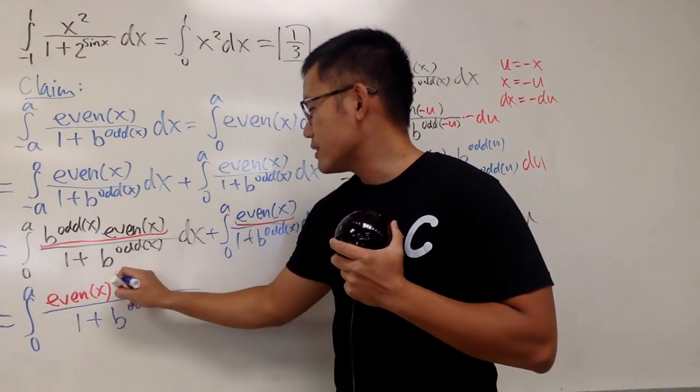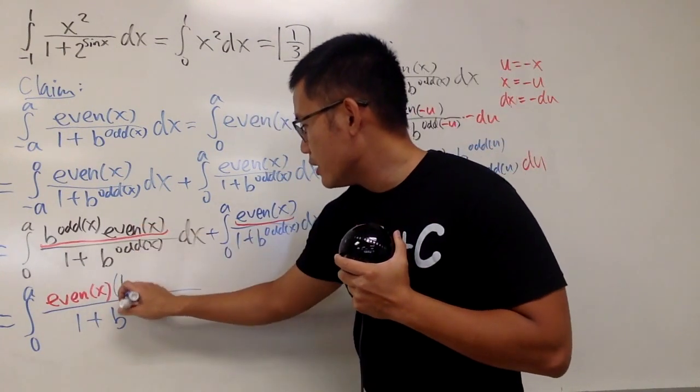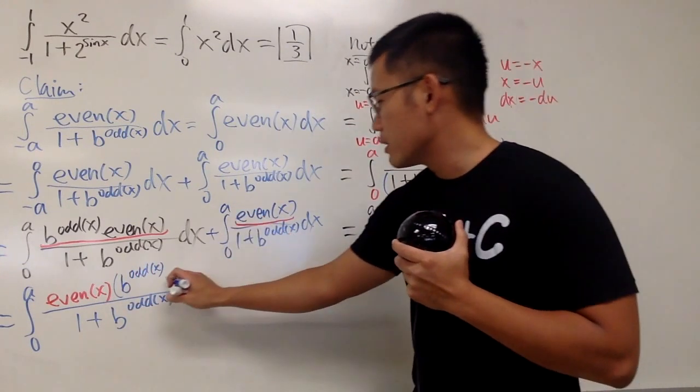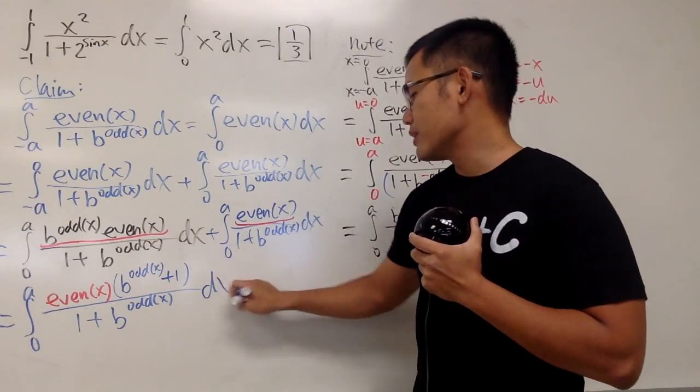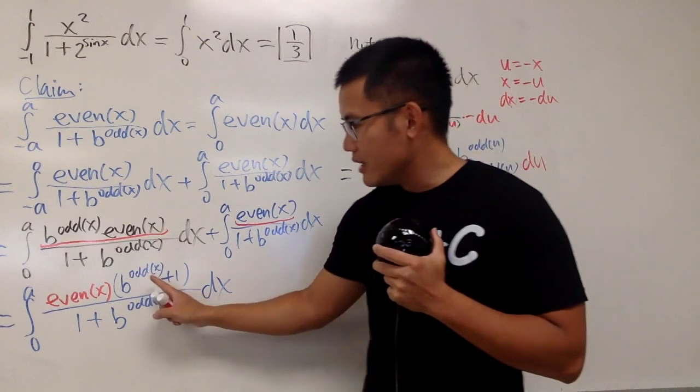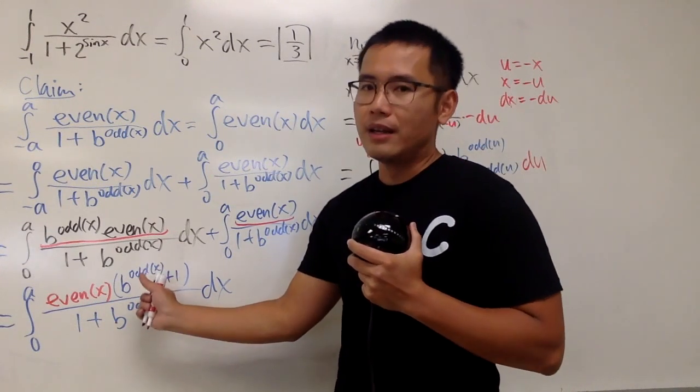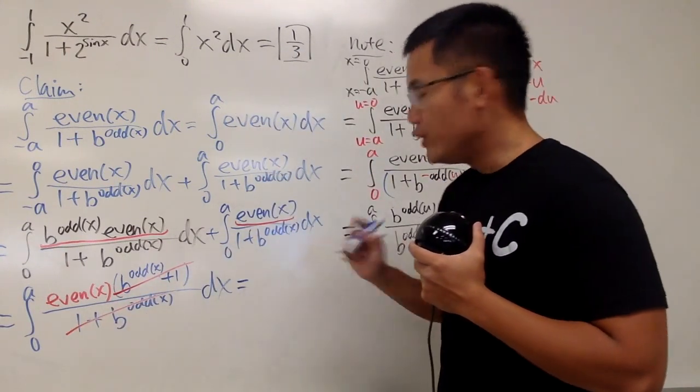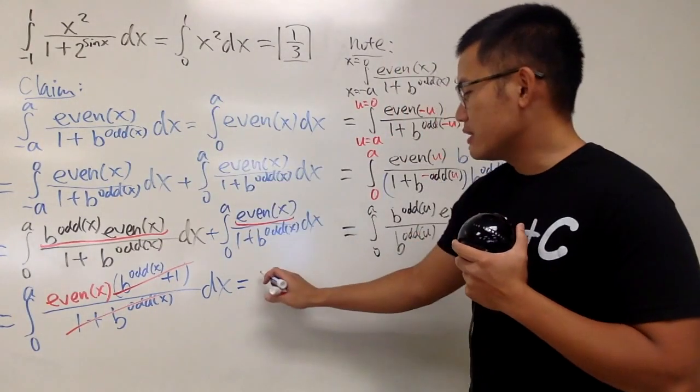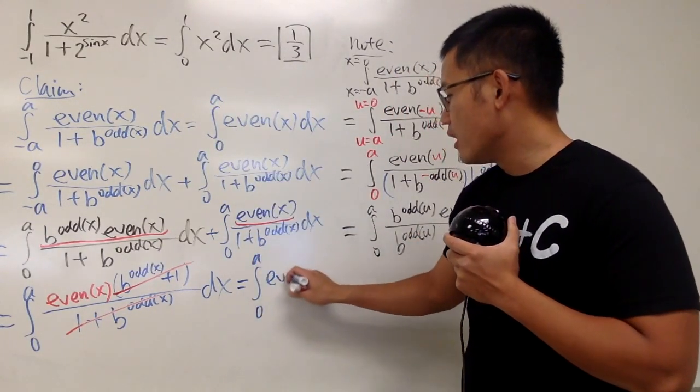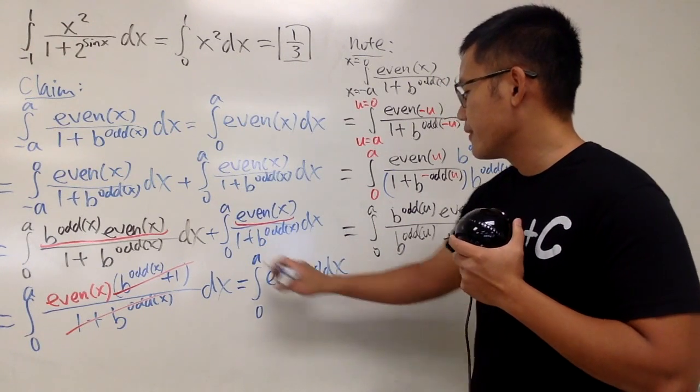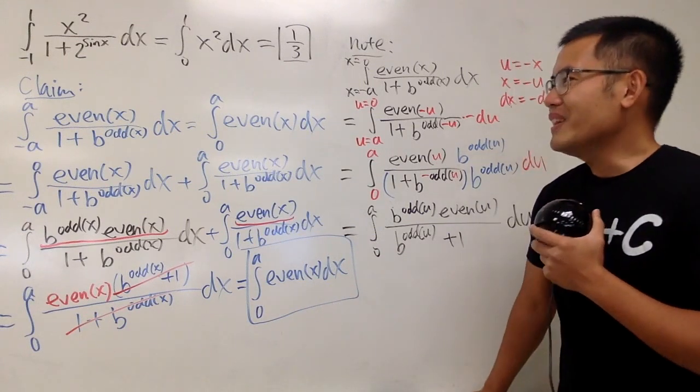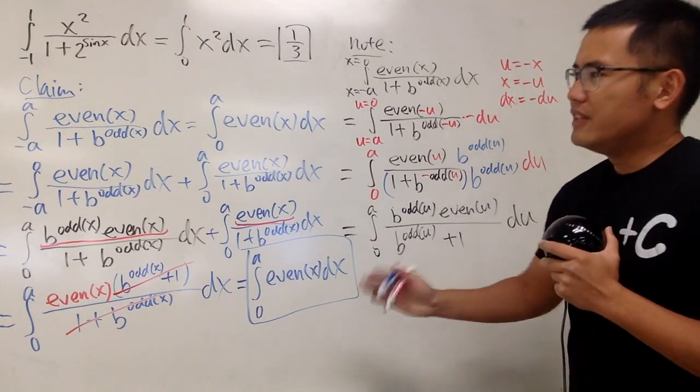And what's the left over? This right here, we have b to the odd function, and this right here, of course, we have to plus 1, like this. And, of course, you see that the beauty is this and that, they are exactly the same, because the order of addition doesn't matter, so you can just cancel them out. And, in the end, you have a really nice property. This integral is just the same as the integral going from 0 to a, of whatever that even function is. That's very, very nice. So, this is one of the nicest properties that involves the even and also the odd function.